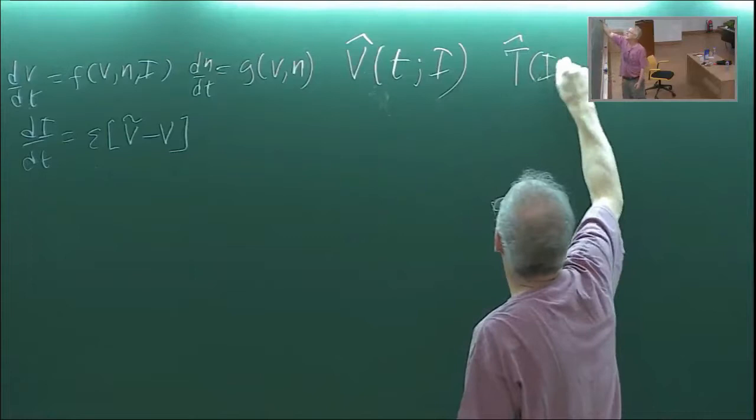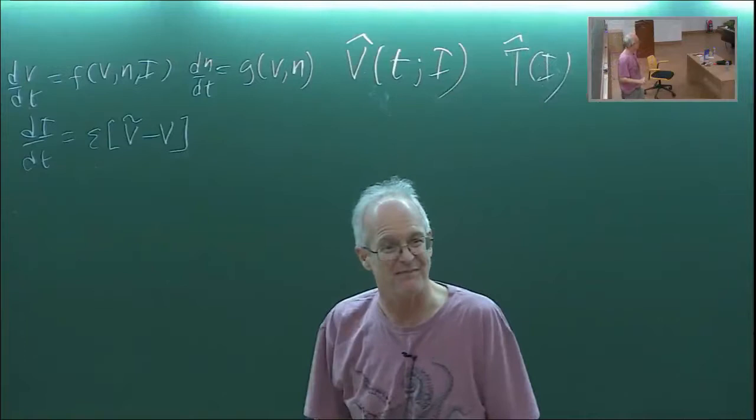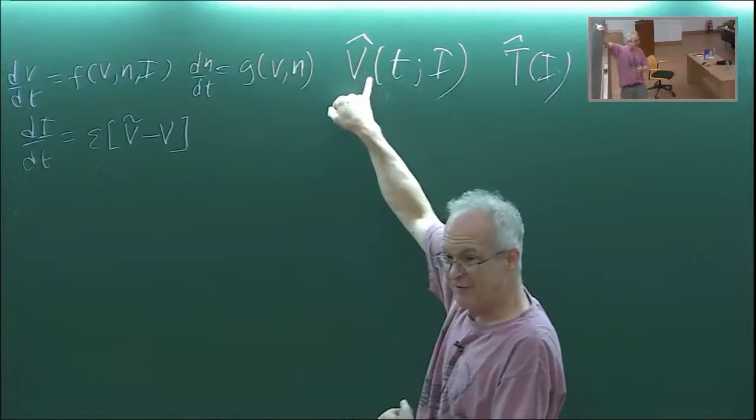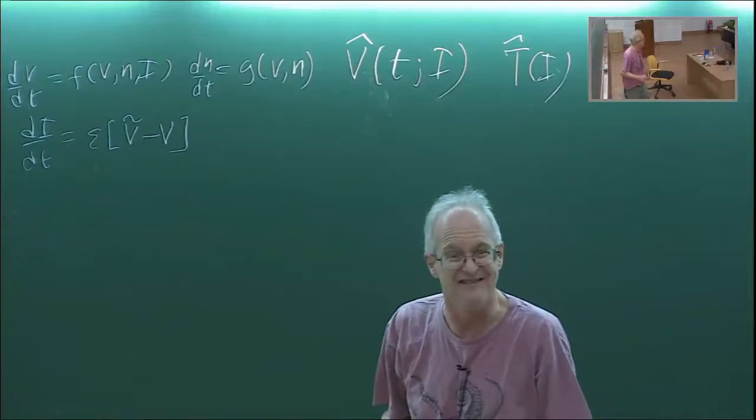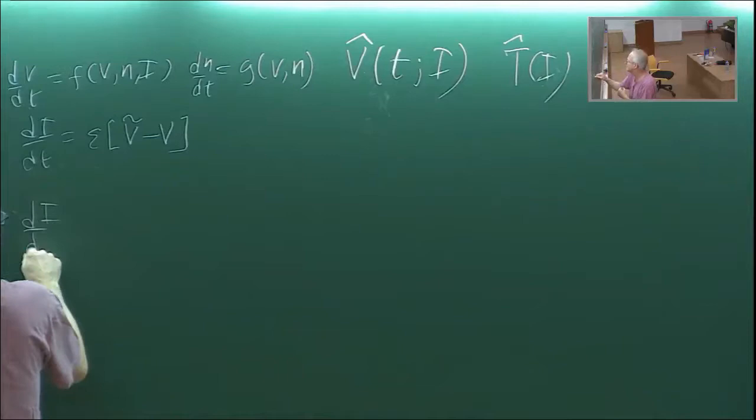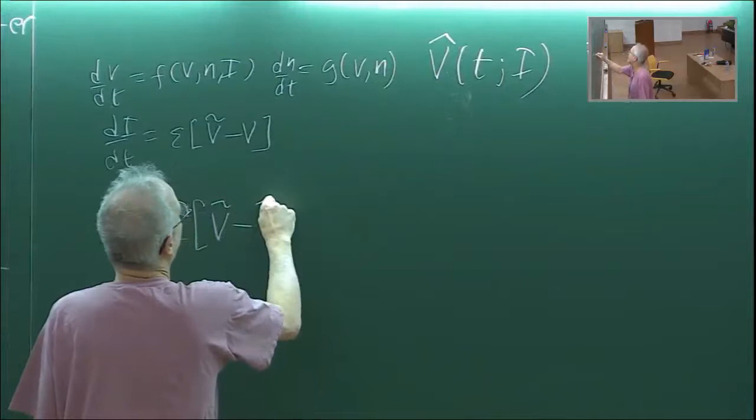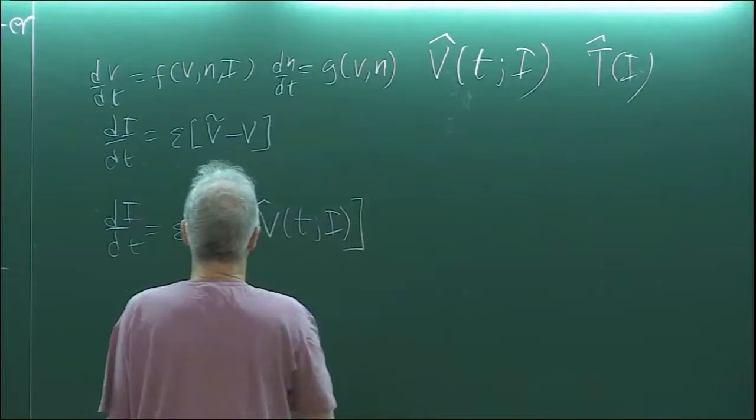For each i we have this v-hat of t semicolon i, which is a periodic oscillation. Let's feed that back in: di/dt equals epsilon times V tilde minus v-hat of t semicolon i. This is periodic.